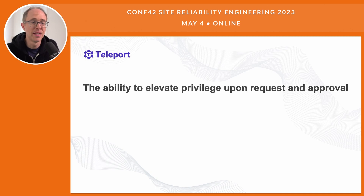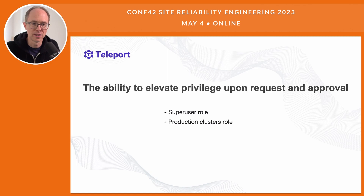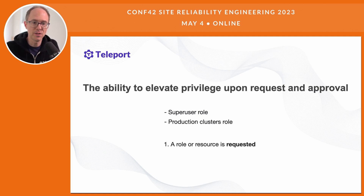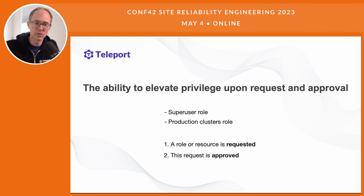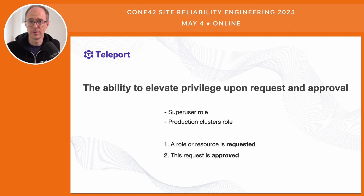Number two in this ideal scenario is the ability to elevate privilege upon request and approval. This could be assuming a role temporarily — like a super user role or a particular role set up for production clusters — or accessing some particular piece of infrastructure temporarily, like a server, a Kubernetes cluster, or a database. There are two parts: a request is made by an engineer, and then the request is approved by another engineer with the rights to approve. There's flexibility in who can approve, managed via RBAC.